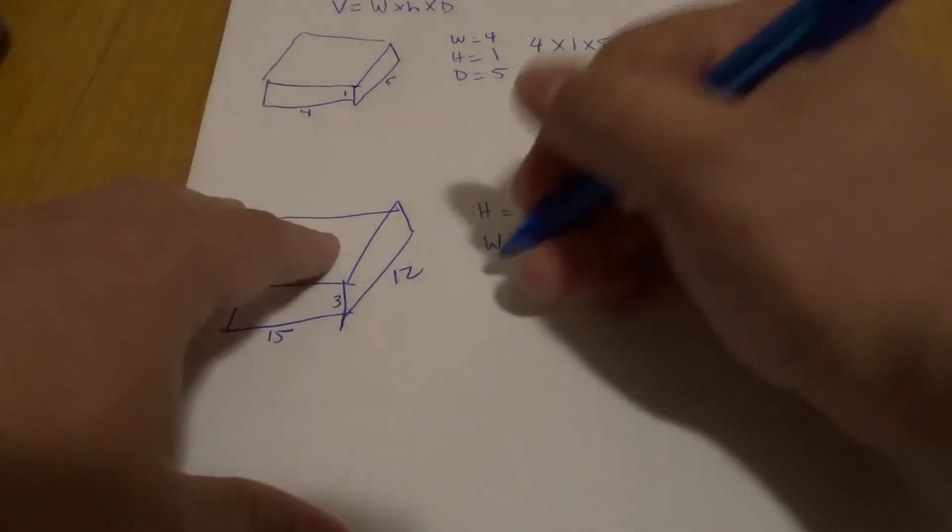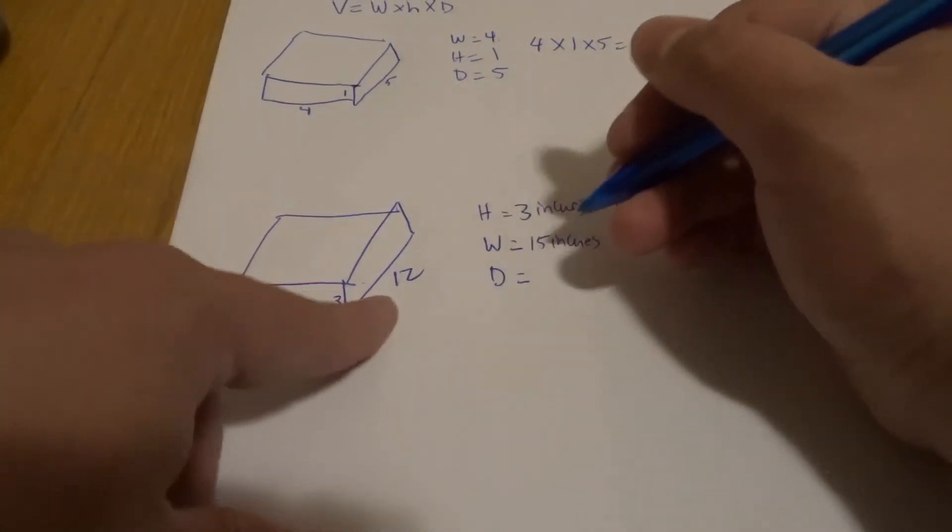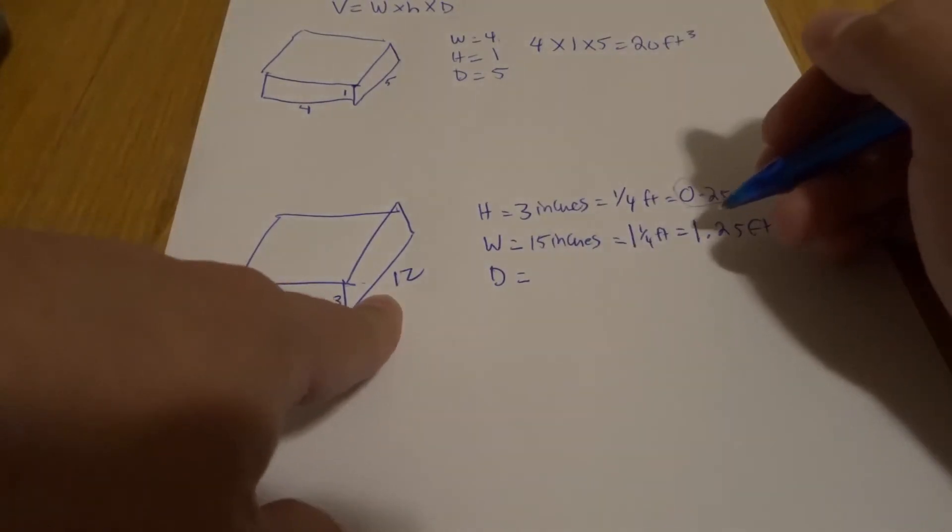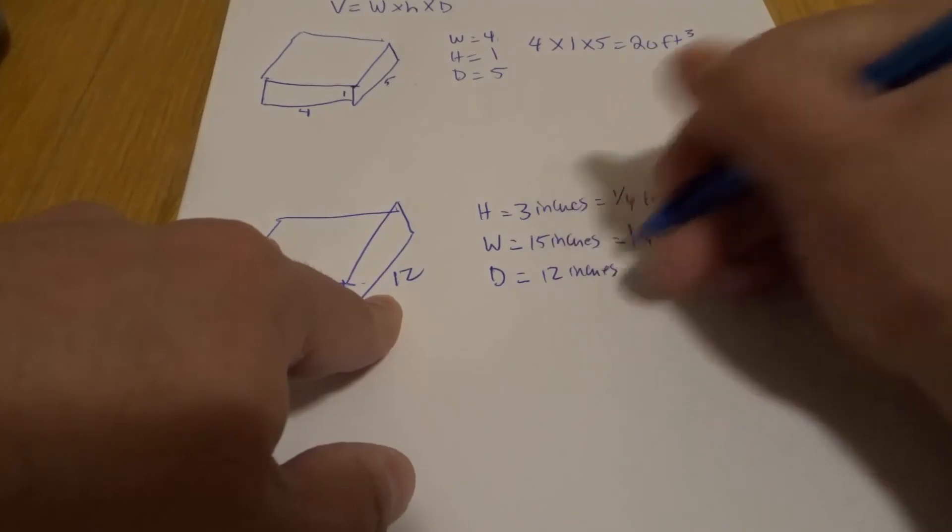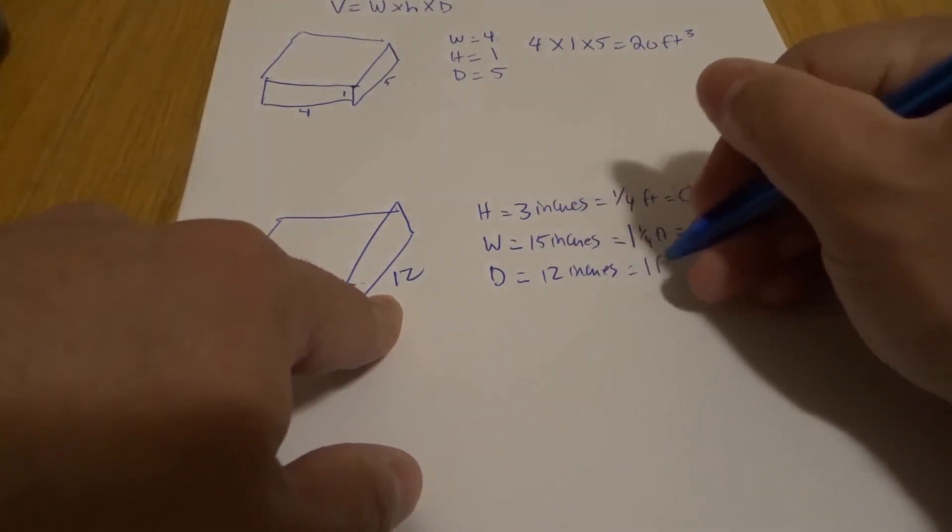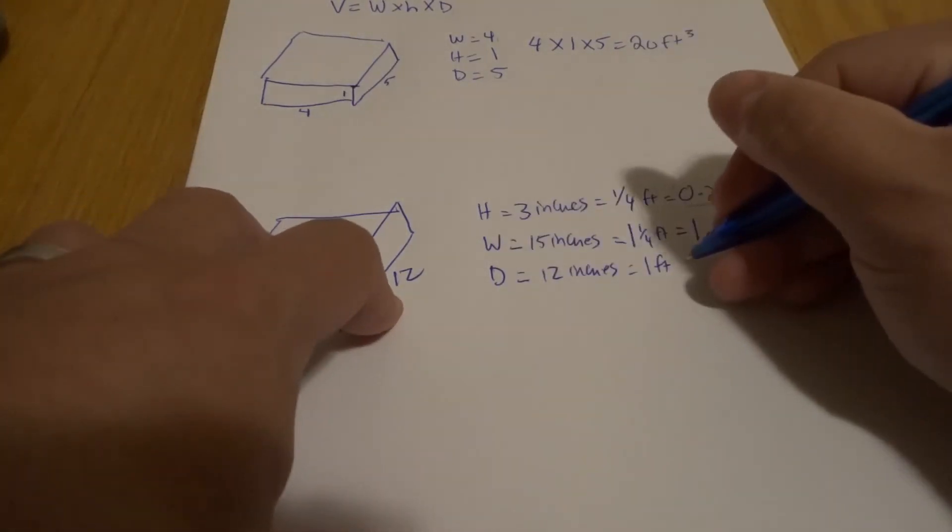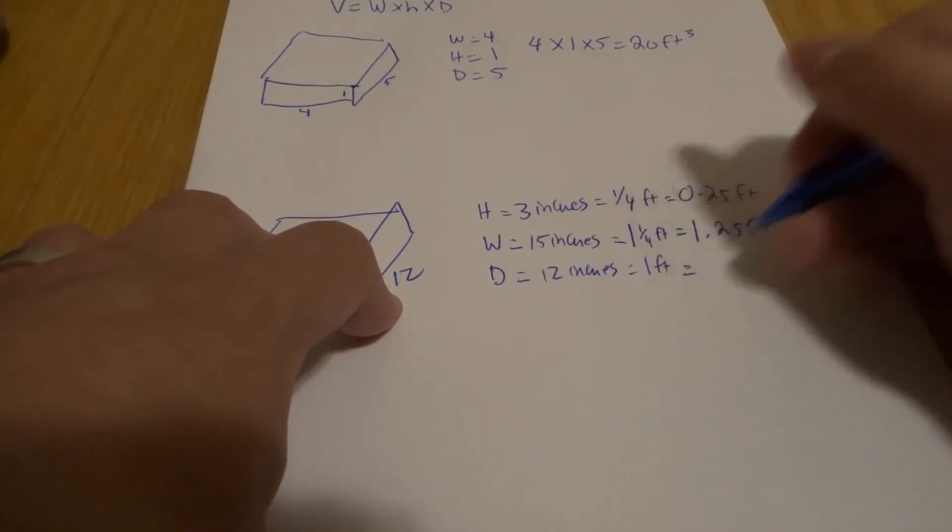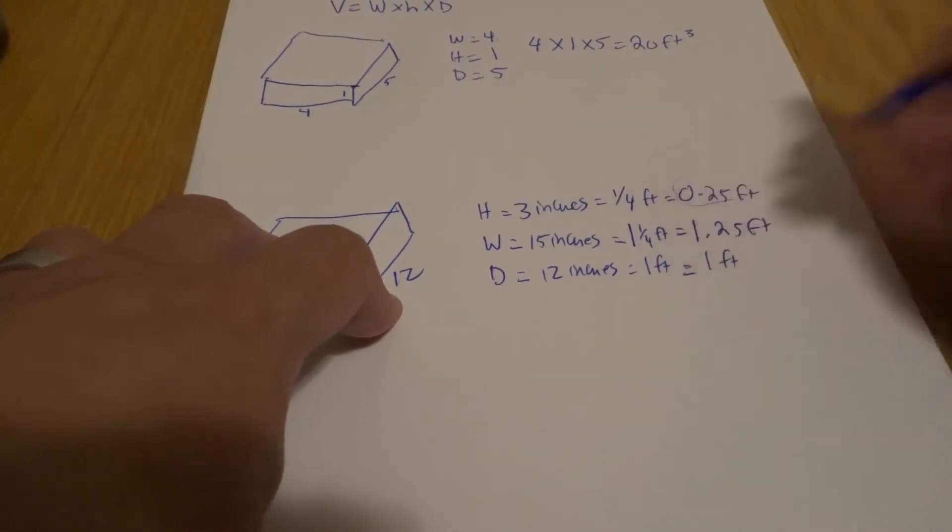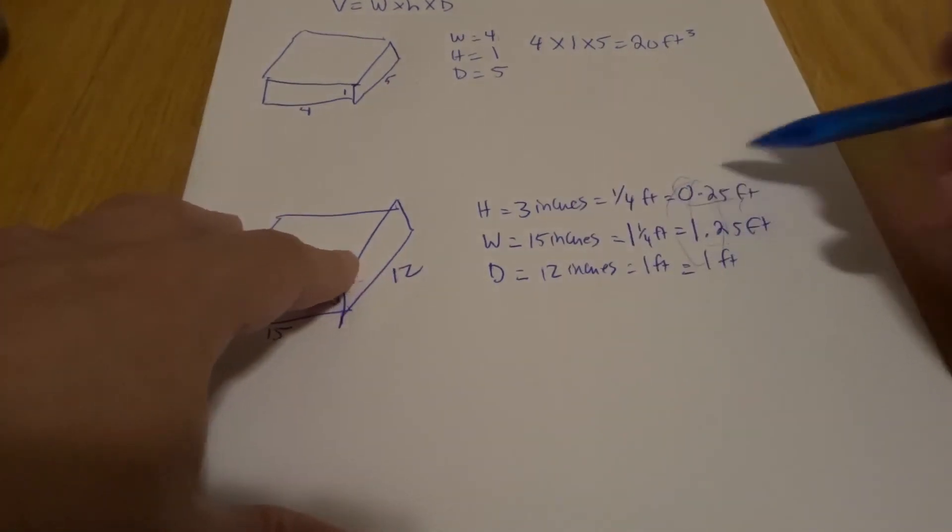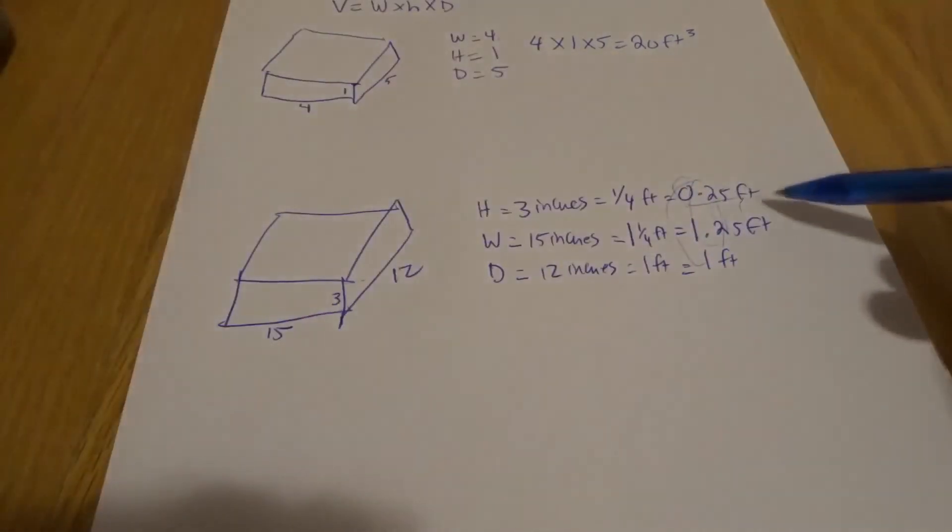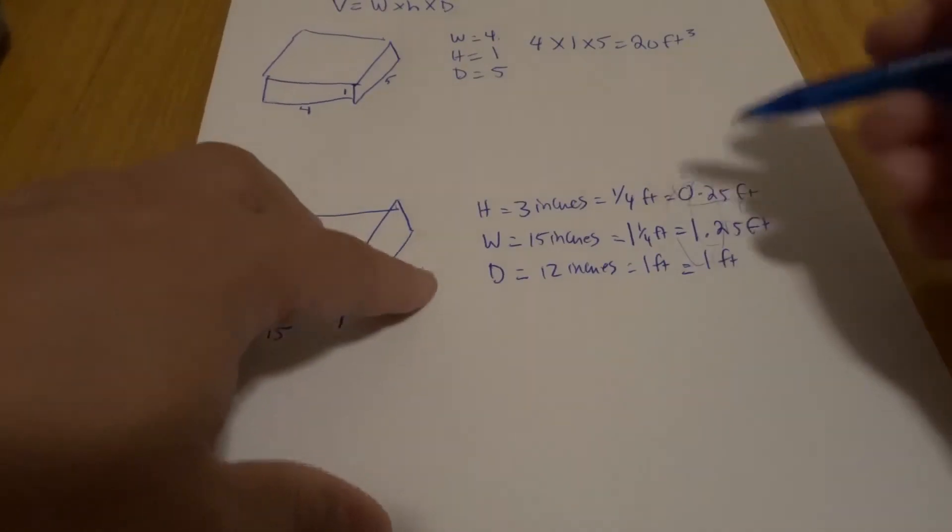And then last but not least, we have our depth, which is actually going to be 12 inches. Which is actually exactly one foot. I made it nice and easy. So it's one foot. Once again, it's just converted to one foot, like 1.0 feet. So now we have our three numbers in decimal form - or numeral form, I should say - numbers that are converted into feet.